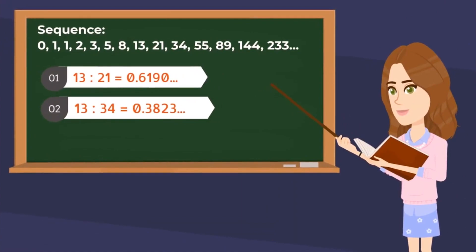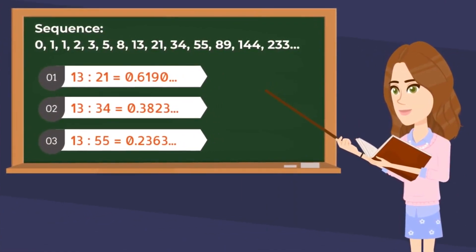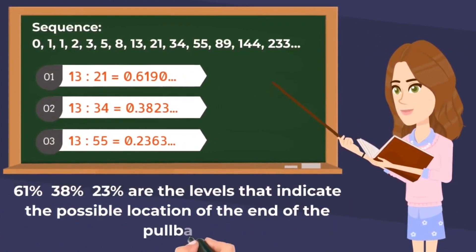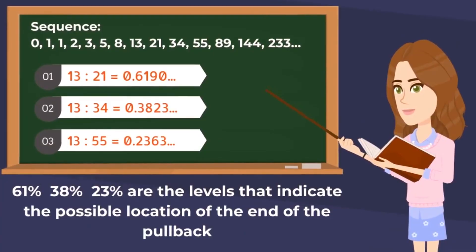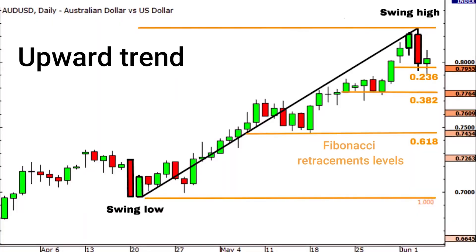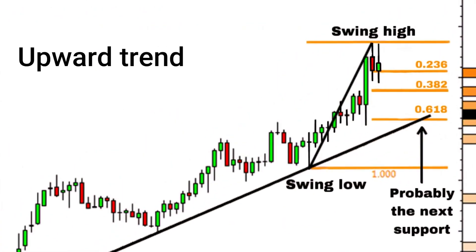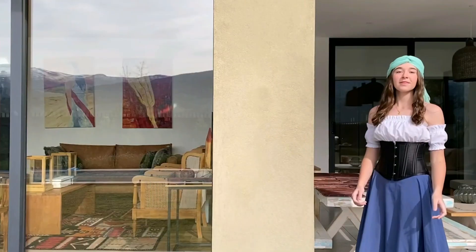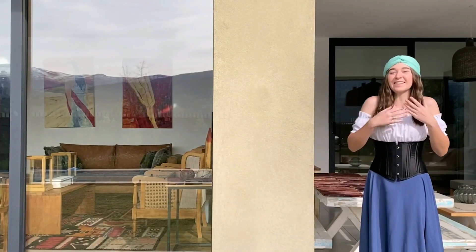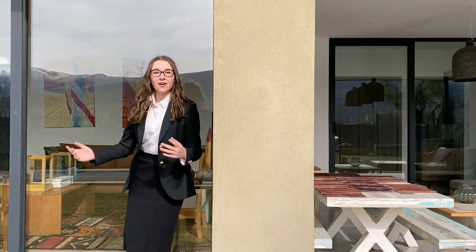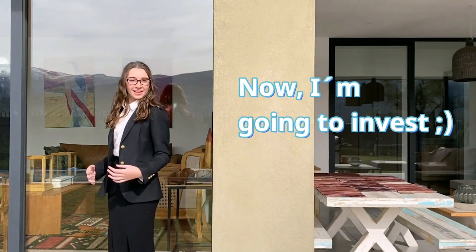But how do we know the pullback is over? Divide one Fibonacci number by the next one, and the next one — you'll get three percentages that indicate the possible location of the end of the pullback. The direction of the previous trend is likely to continue, but the price usually retraces to one of those ratios before that happens. Mathematics is everywhere — make it work for you.